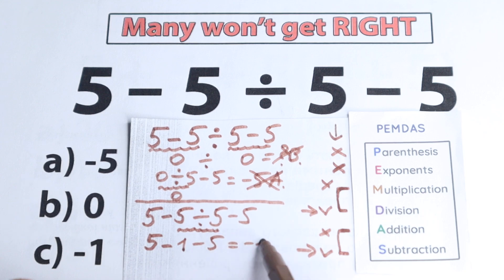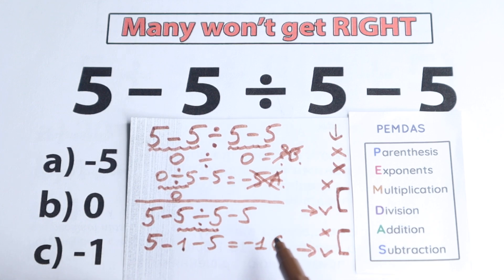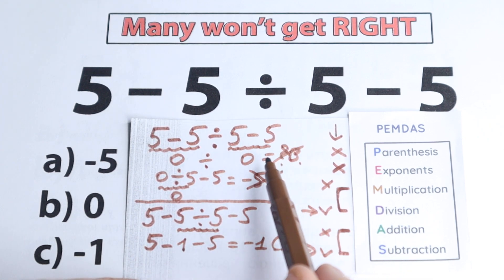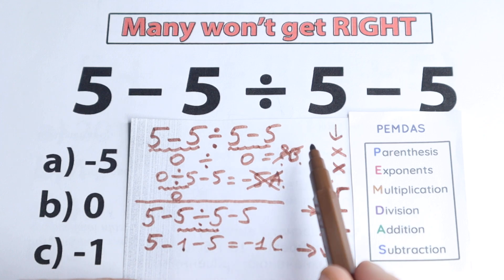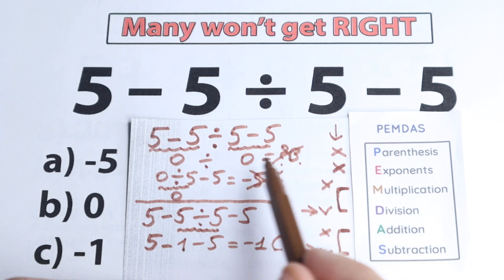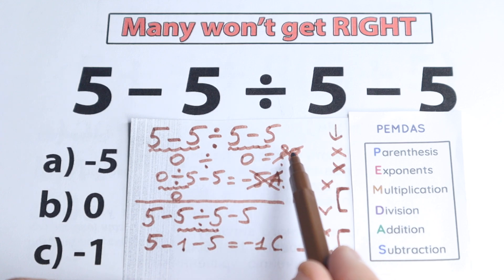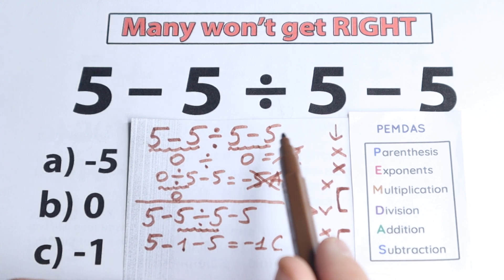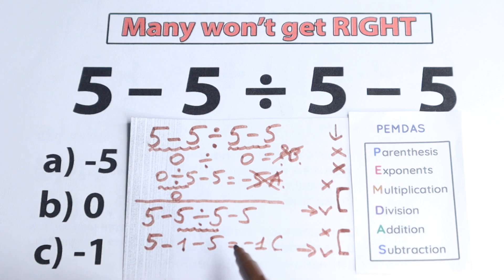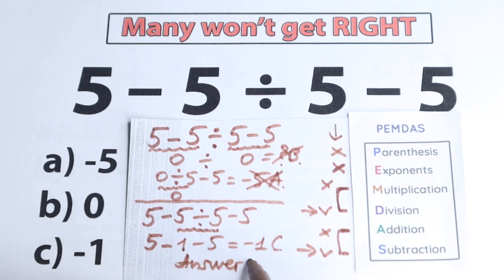So we have option C: minus 1. Option C — really great solution. One part of you may have solved it as 0, but that is a bad solution. However, if you learn how to solve it correctly, you'll forget about that and solve it correctly all the time. The answer is option C, and that is minus 1.